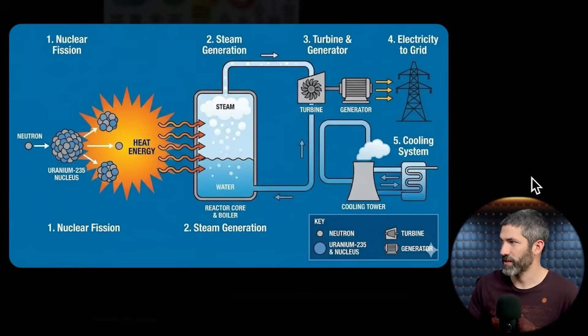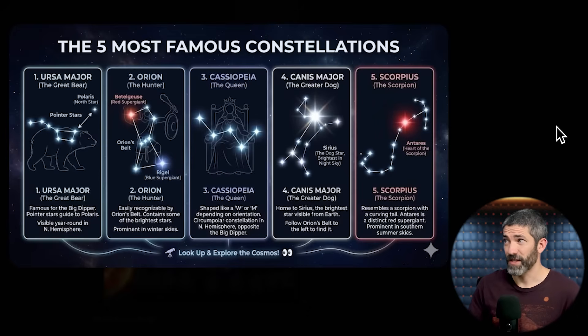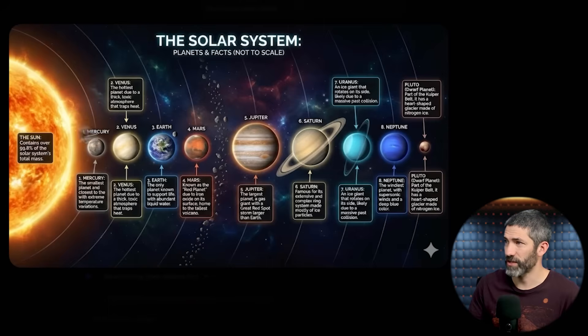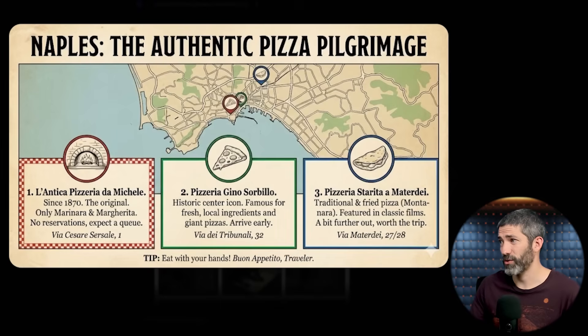I did so many more of these infographics: how nuclear energy works, how to cook the perfect steak, how to perform the Heimlich maneuver, the five most famous constellations — impressive to have the layout of each constellation perfectly — the solar system with one fact about each planet, a language cheat sheet for English tourists visiting China with pictures (the Chinese is all correct), and a flyer with three pizza places to visit in Naples. After experimenting with all iterations of text-image models over the past couple of years, this just truly blows my mind more than anything else I've seen.